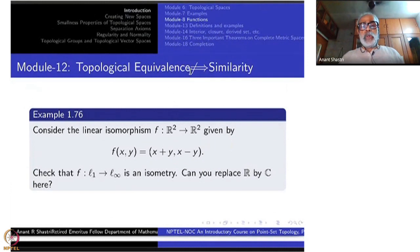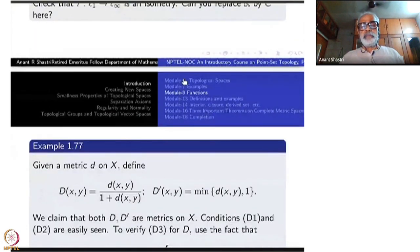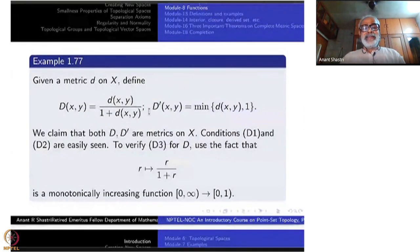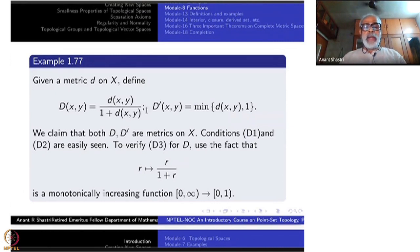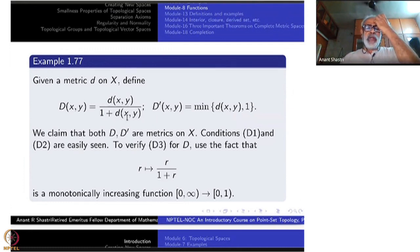Namely, topological equivalence does not imply similarity. Start with a metric d on some non-empty set X. Now define another metric, which I am denoting by capital D: D(x,y) = d(x,y) / (1 + d(x,y)). Since d(x,y) is non-negative, 1 + d(x,y) is never zero, therefore I can divide by this number and the definition makes sense.